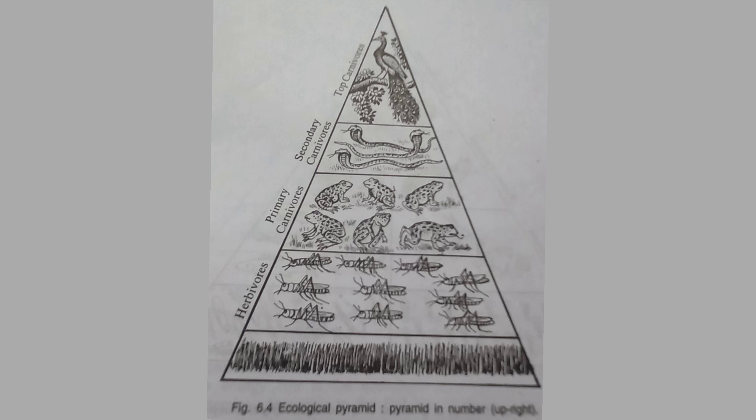Here, producers are ingested in large numbers by a smaller number of primary consumers, that is herbivores. Similarly, these herbivores are eaten by a lesser number of secondary consumers, and these in turn are eaten by a still lesser number of tertiary consumers.